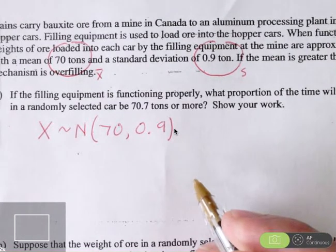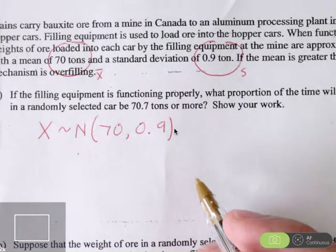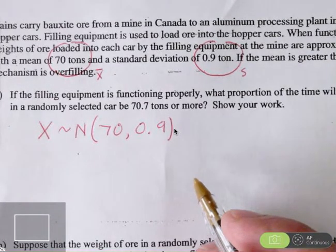Understand there's variability in all kinds of processes. A hopper car pulls up to the filling machine. The machine fills it up. You don't get exactly 70 tons of ore. It might be a little bit more, might be a little bit less. There's always variability in processes such as this.